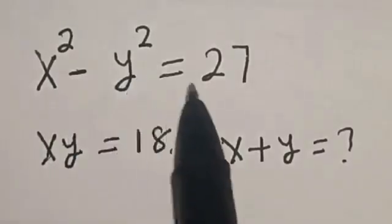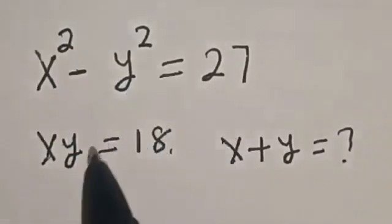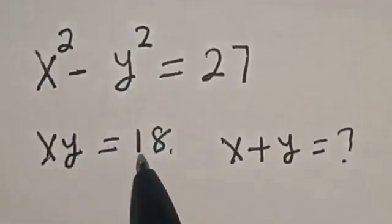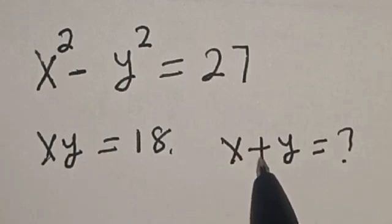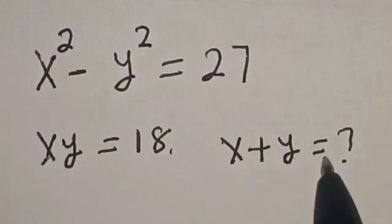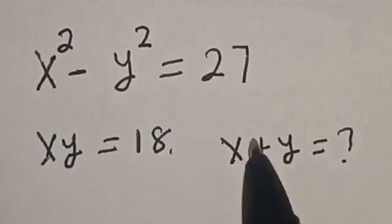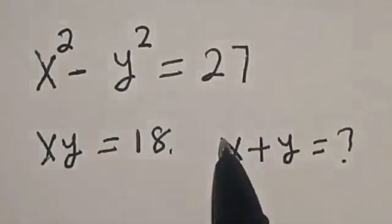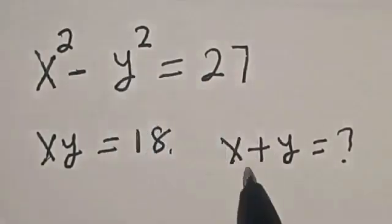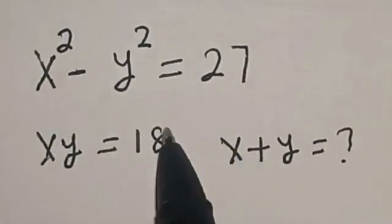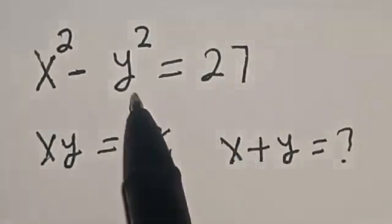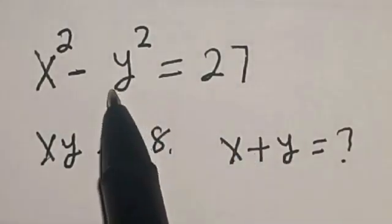x squared minus y squared is equal to 27, and xy is equal to 18. What is the value of x plus y? Welcome to my class. In this class, we want to find the value of x plus y from this given Olympiad equation.